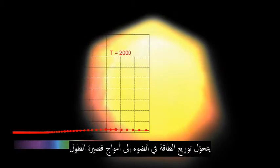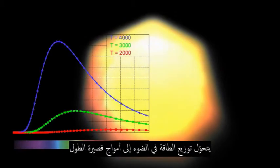At low temperatures, the primary color inside the kiln is the infrared, and we cannot detect it with our naked eye. But as the temperature rises, the kiln begins to glow red. And as the temperature continues to rise, the dominant color changes to orange, then yellow, then bluish white. The distribution of energy in light shifts to shorter wavelengths as the temperature rises.